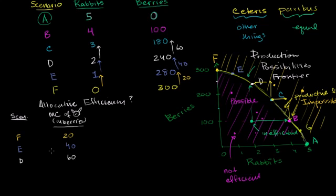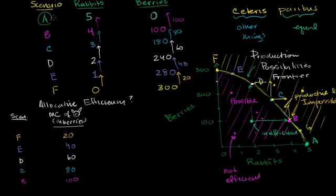In scenario C, the marginal cost is now 80 berries. And in scenario B, the cost of getting one extra rabbit — sitting in scenario B — is 100 berries. I won't even go into scenario A, because it's impossible to have any more rabbits and you have no more berries to give up. So these are all the possible scenarios and their marginal costs.